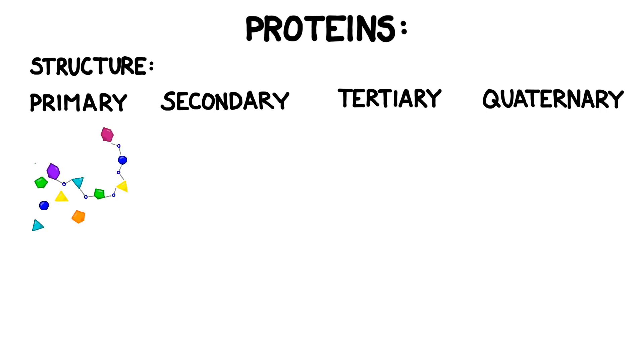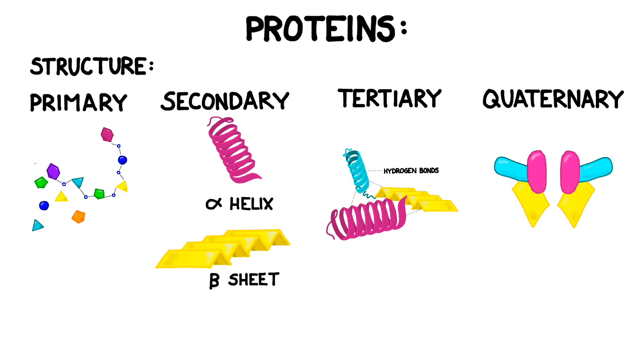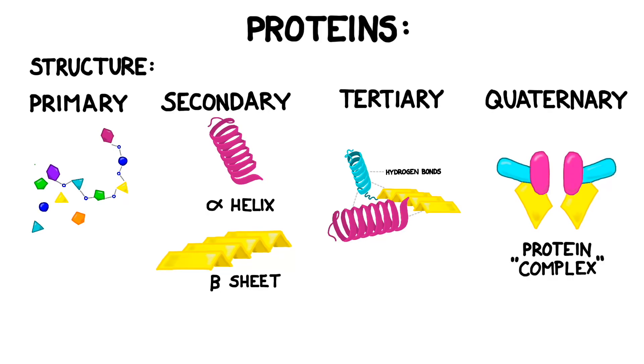Proteins may take on a primary, secondary, tertiary, or quaternary structure. When we have a number of protein subunits all working together we call this a protein complex.